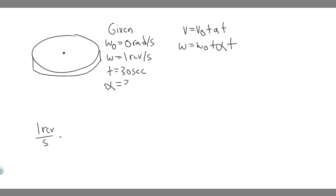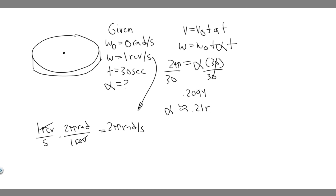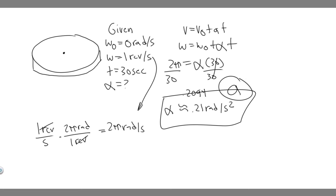Keep in mind the angular velocity has to be in radians per second, not revolutions. So we convert: one revolution per second times two pi radians per revolution gives two pi radians per second. Now plugging in: omega final is two pi, omega zero is zero, and T is 30 seconds. Dividing both sides by 30 gives alpha equals 0.21 radians per second squared. That's the answer to A.